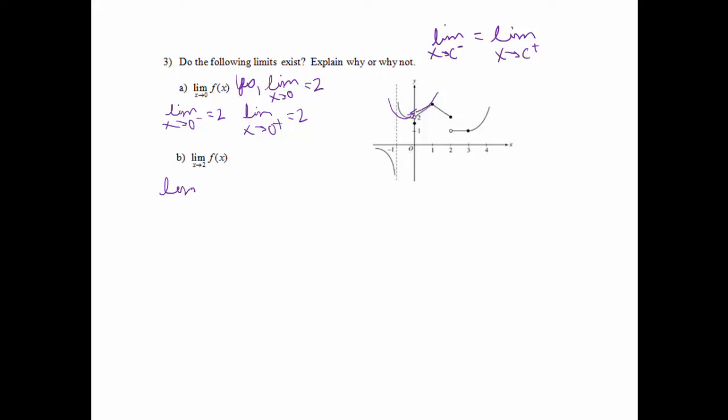Okay, the limit as x approaches 2. So let's see what's happening as we approach from the left side. So as I approach 2 from the left side, I'm actually coming in right here and I'm going to stop at 2. And then if I find the limit as x approaches 2 from the right side, as I'm coming in from the right, I'm way down here at 1. Those limits do not equal each other. So I'm going to say, no, the limit does not exist. And when it says to explain why not, it's because the limit as x approaches 2 from the left does not equal the limit as x approaches 2 from the right.